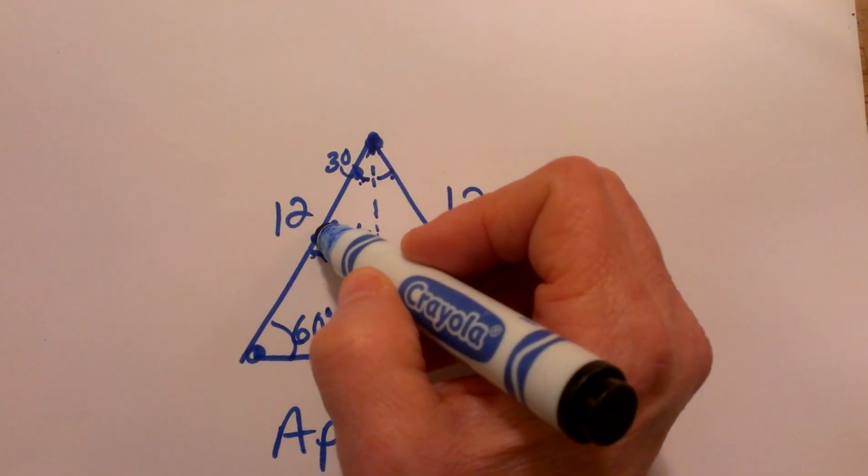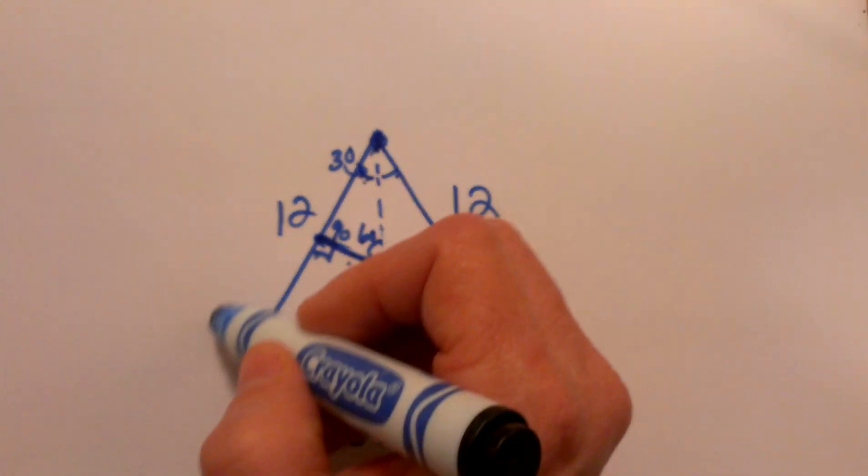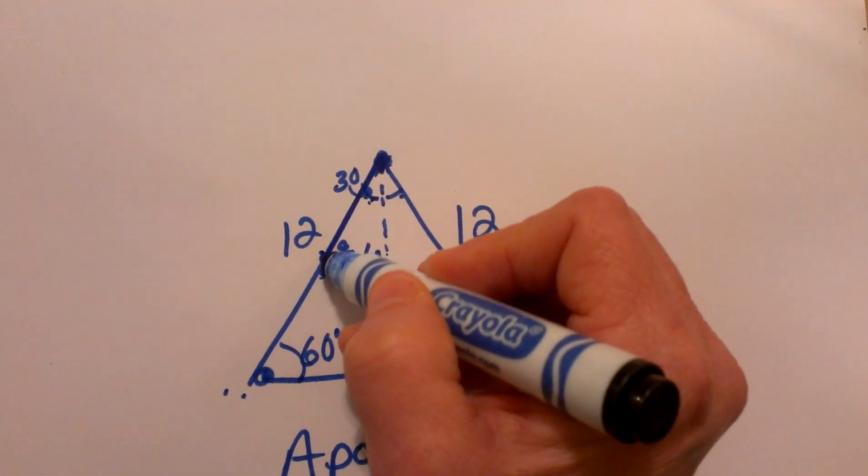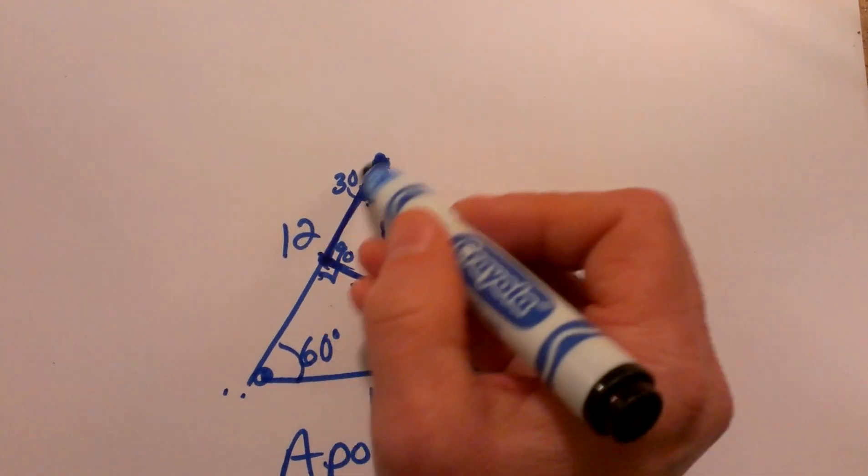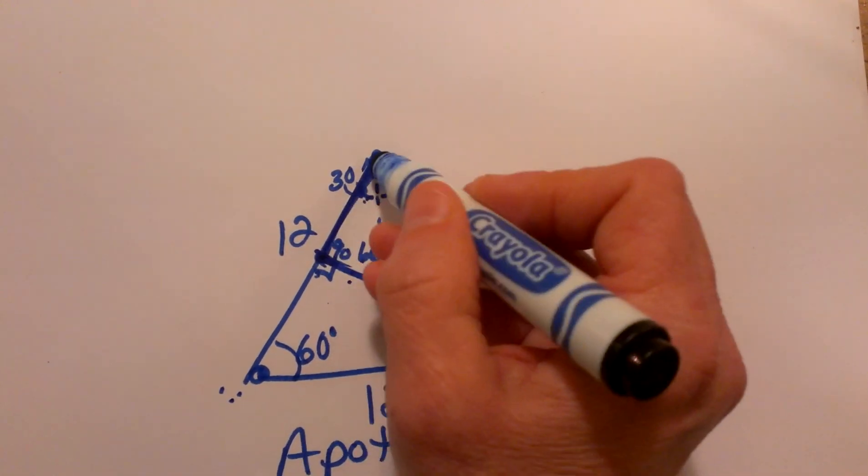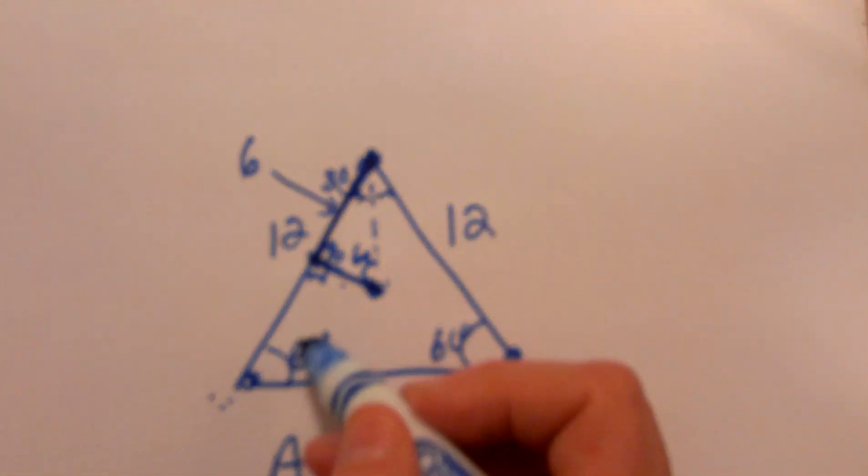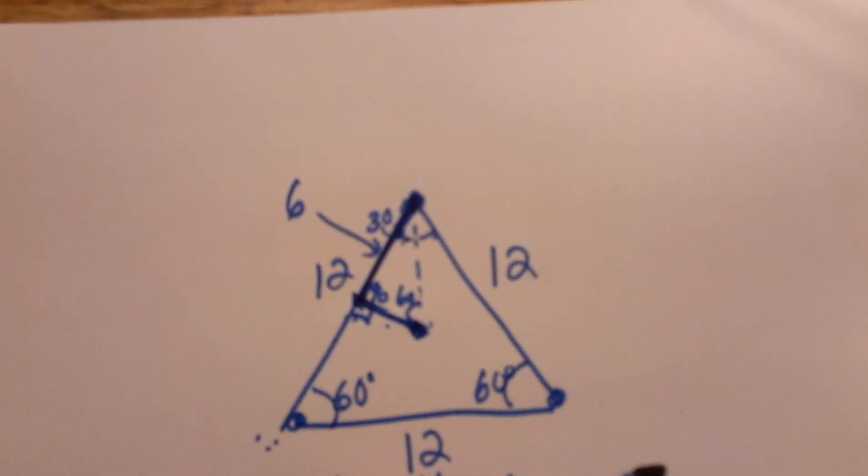So all I really need to do is work with what I know. I know this full side is 6, so when I draw in the apothem, this side of the triangle—I am sorry, this side is 12—so when I draw in the apothem, it cuts it in half. So this portion is 6 because it is cutting the side of 12 in half.